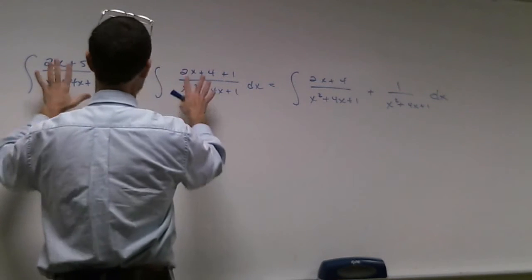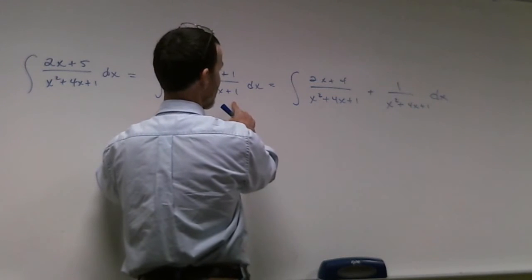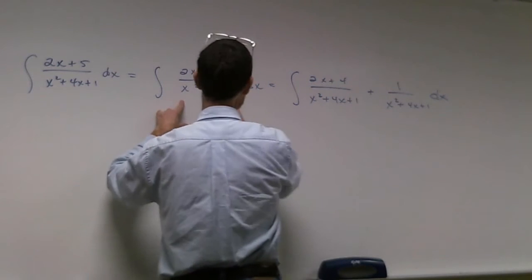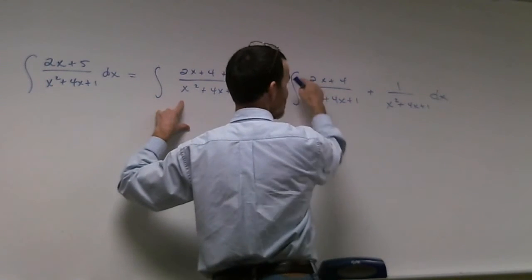So just believe. If you believe that, you believe these two are equal. Now, I'm going to use a common denominator and take this apart. Because if the top had been 2x plus 4, I could easily do the problem. Because now the derivative of the bottom is on the top.